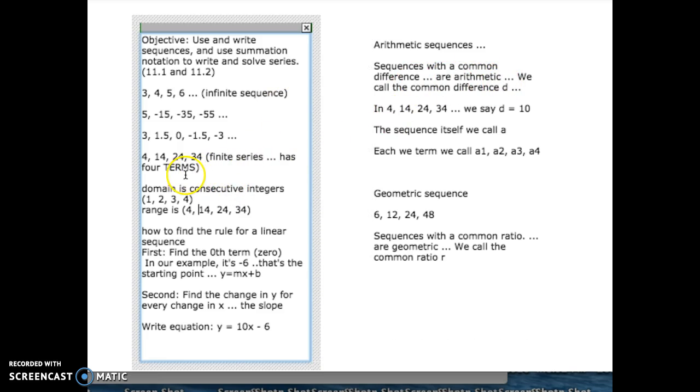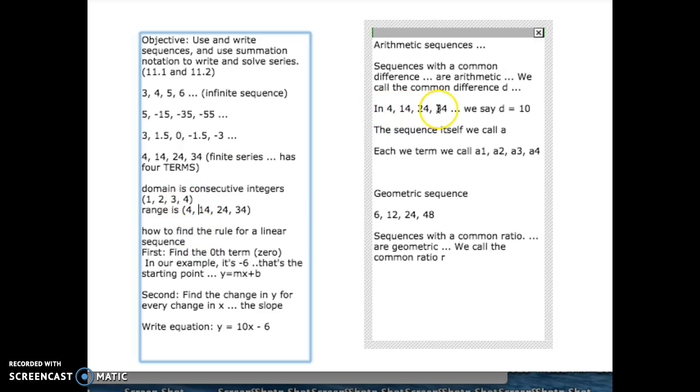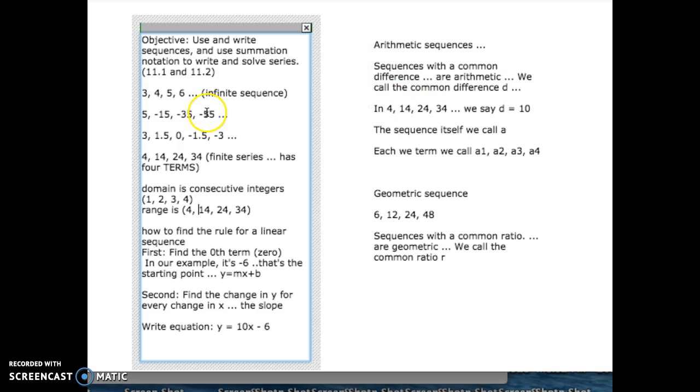And the number that we go up every time over is called the common difference. So, in other words, linear equations, when you lay out the y values as a sequence, you will get a common difference. For example, and these are all linear. Here the common difference is 1. Here the common difference is negative 20.